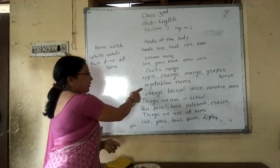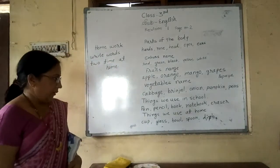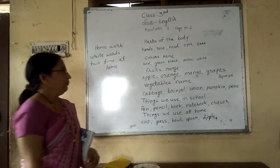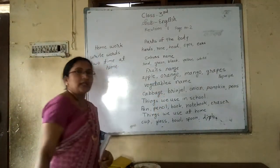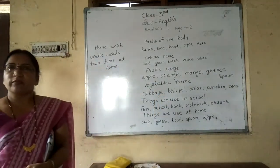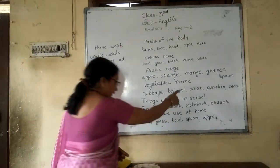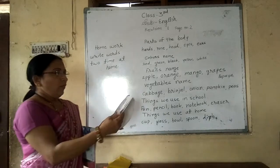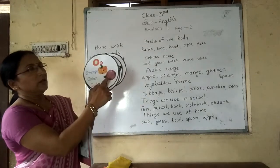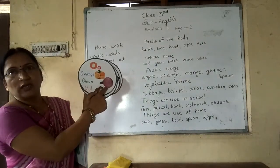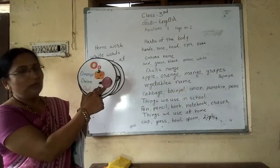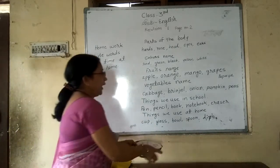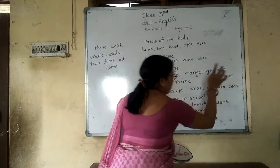Then I will read vegetables. Cabbage — this is cabbage. Brinjal. Onion. Look at this picture — you can see onion. Then pumpkin and peas.